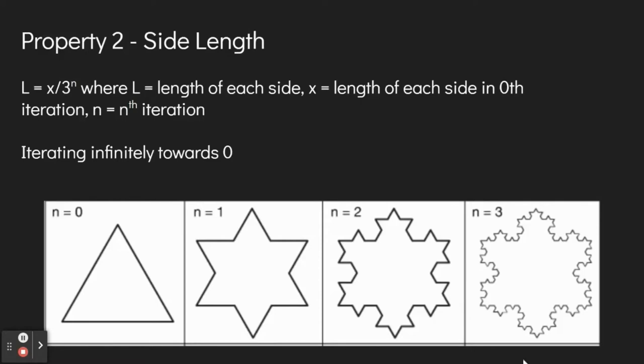The length of each side starting at the zeroth iteration is x, and it is x divided by three, x divided by nine, and x divided by 27, respectively, for the first, second, and third iterations.